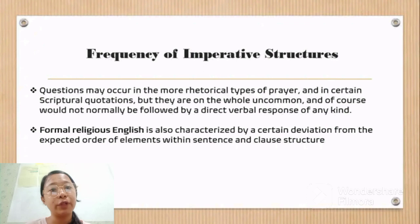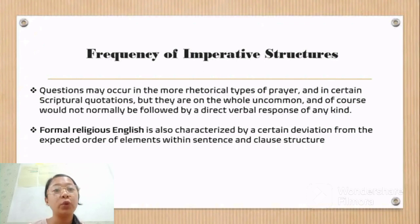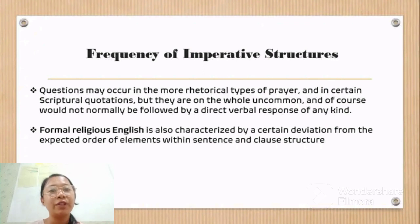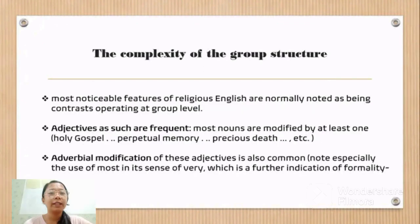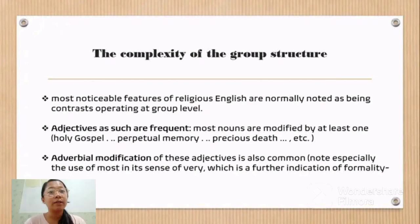The morphological idiosyncrasies of certain parts of the pronoun system of religious English have been so frequently pointed out that we shall not dwell on them here. It is clear that 'thou', with its related forms, is probably intuitively the most dominant feature of this variety. What is never pointed out, however, is that other pronouns show restrictions also. The first person singular rarely occurs in the form of prayer even when only one person is speaking. The complexity of group structure of this variety is the main reason why the underlying simplicity of the sentence and clause structure is not readily appreciated, and the most noticeable features of religious English are normally noted as contrasts operating at the group level, with both nominal and verbal groups displaying distinctiveness here.